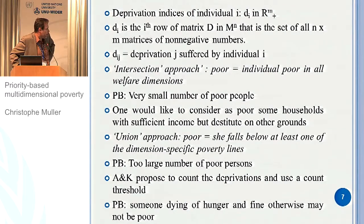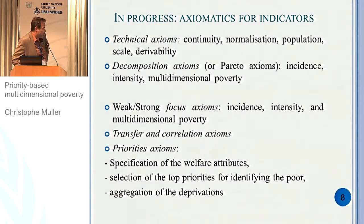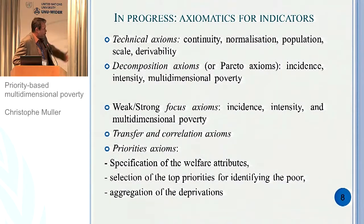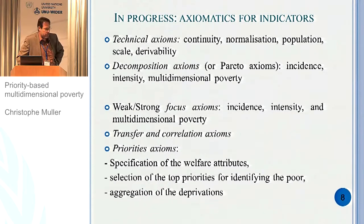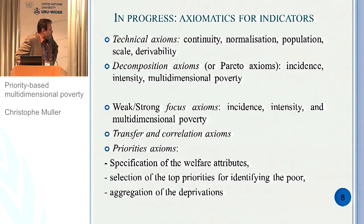There are ways to address this, for example by using counting deprivation as in James Foster's work. What I'm working on is how to develop an axiomatic framework for these multi-dimensional poverty indicators. You have a series of axioms — some technical ones like continuity, normalization, scale invariance, derivability, and population invariance — which have more technical than normative content. There are also decomposition axioms, sometimes replaced by additivity axioms, which deliver the same kind of linear formula of kernel functions.